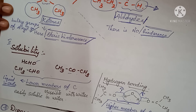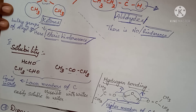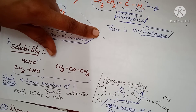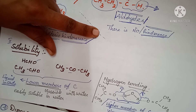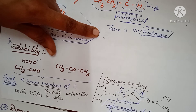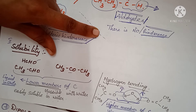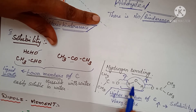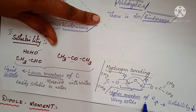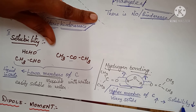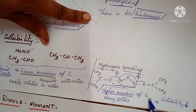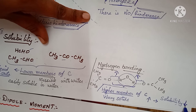If aldehydes and ketones have a higher number of carbons, they are waxy solids and will not be soluble in water. As the number of carbons increases, the solubility decreases.